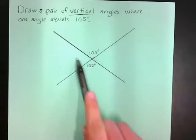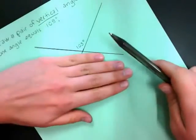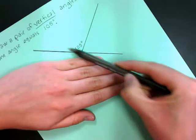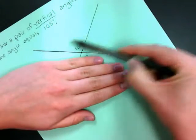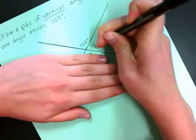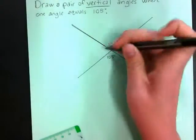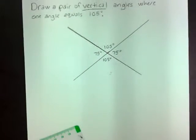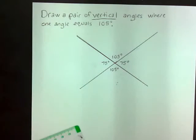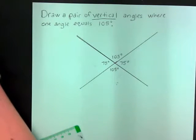And we could even figure out these other two angles right here, because I know 105 plus this little angle right here should equal 180. So I know that this angle right here will be 75, and the angle across from it will be 75 also. And there we have our vertical angles, where at least one angle equals 105 degrees.